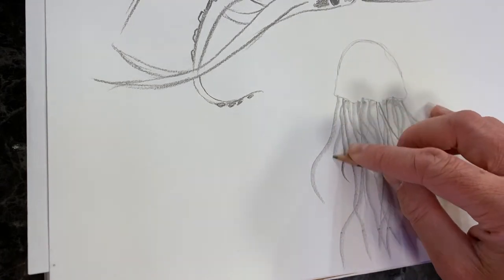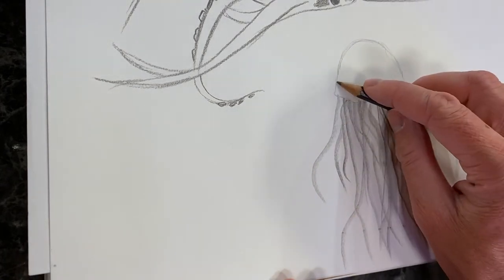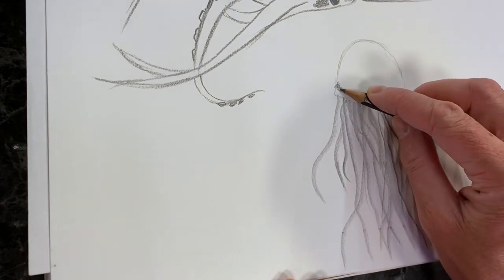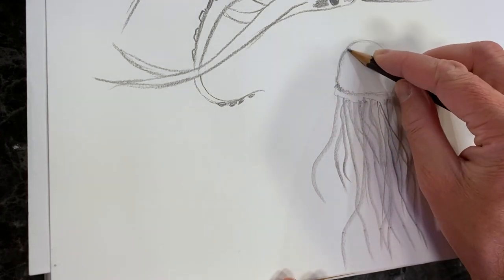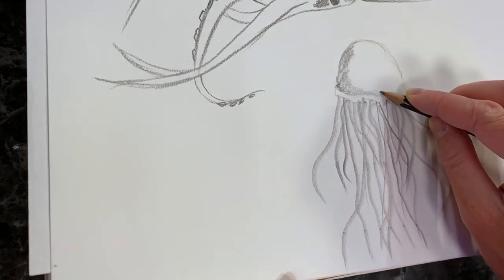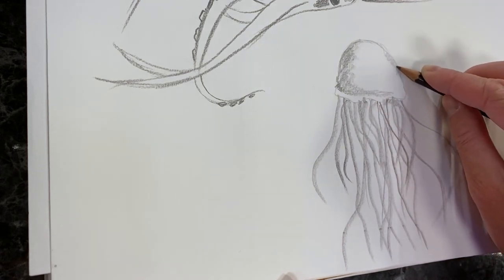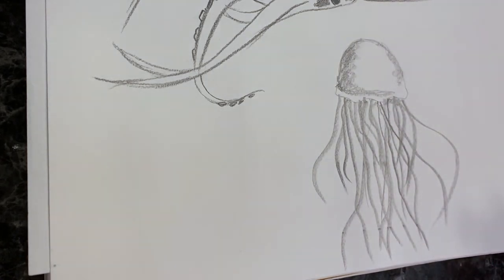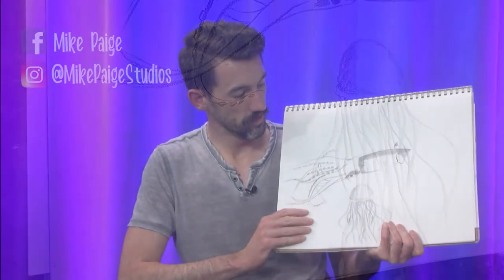And then just a little bit of shading right here and sort of make this a little bit more three-dimensional looking by adding a bit more shading and you've got a very simple jellyfish.